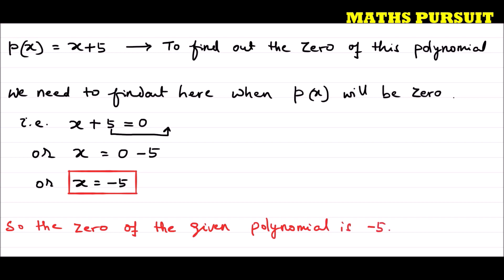Hope you understood this. This is very simple and straightforward. Just we need to find out when the given polynomial, that is p(x) or whatever it may be, is zero.